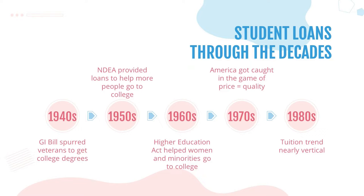Moving into the 1950s, in 1958 the Cold War brought fear that the US was falling behind, especially with the Soviet launch of Sputnik. So Congress passed the National Defense and Education Act, which offered scholarships and loans for folks to get into scientific and technical fields.